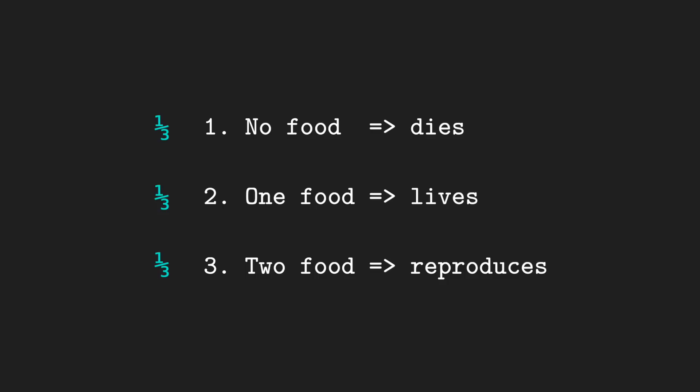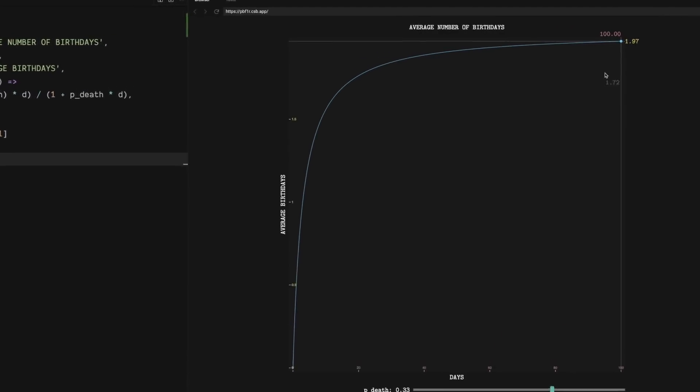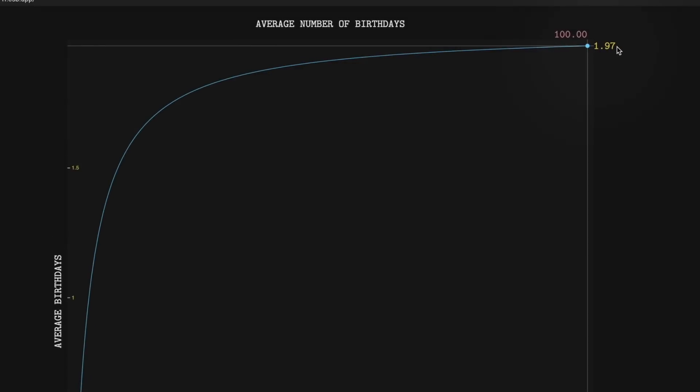There are three main possibilities for a blob. Either a blob gets no food, a blob gets one food, or a blob gets two food and reproduces. So, you'd think each of these possibilities is equally likely, and one third of the blobs die, one third scrape by, and the last third reproduce and replenish the population. Turns out, that's pretty much what happens. So, let's check the case where one third of the blobs die. Well, well, well. An average age of two.